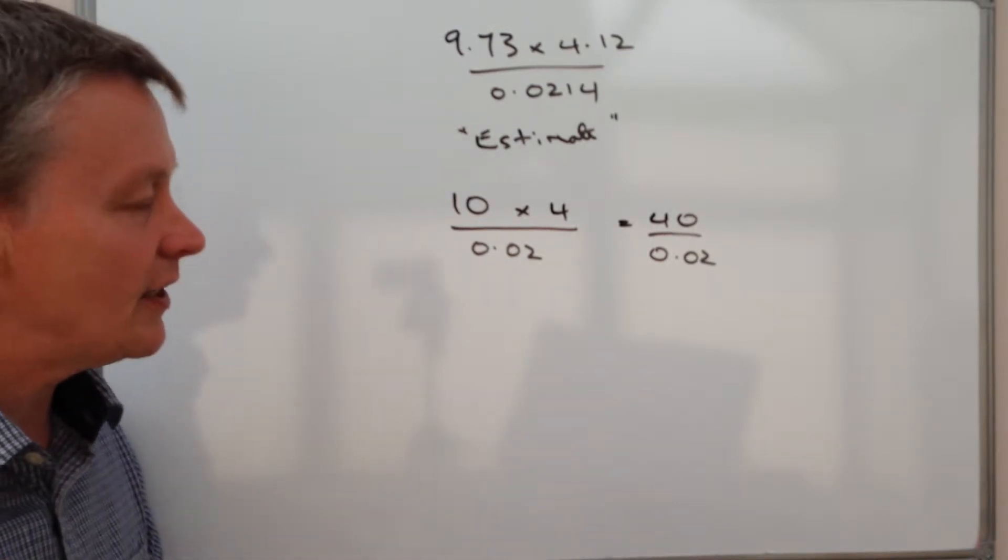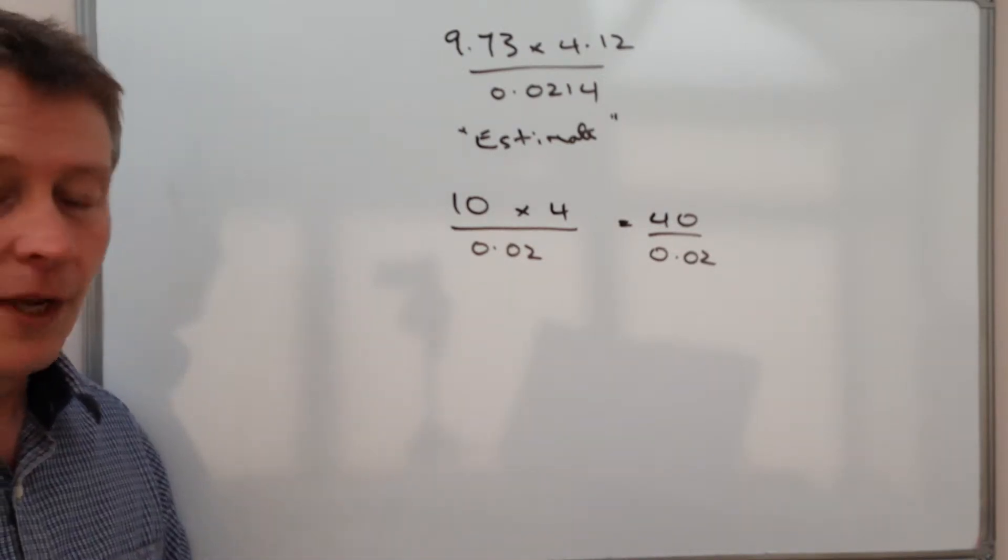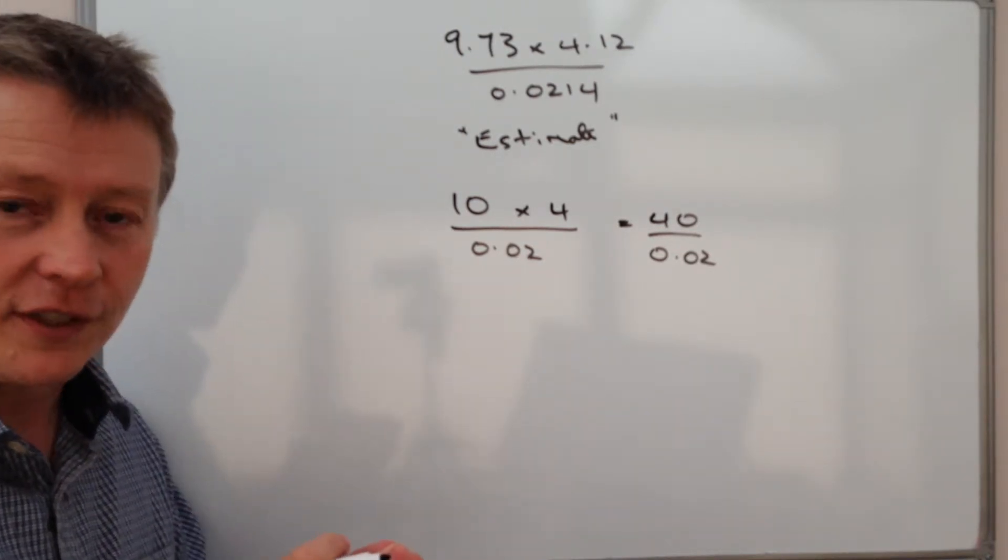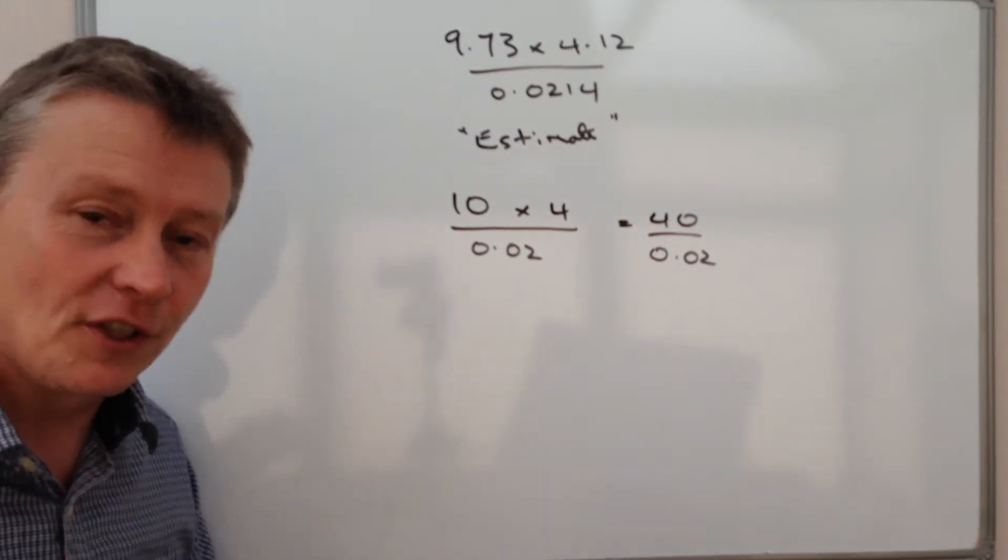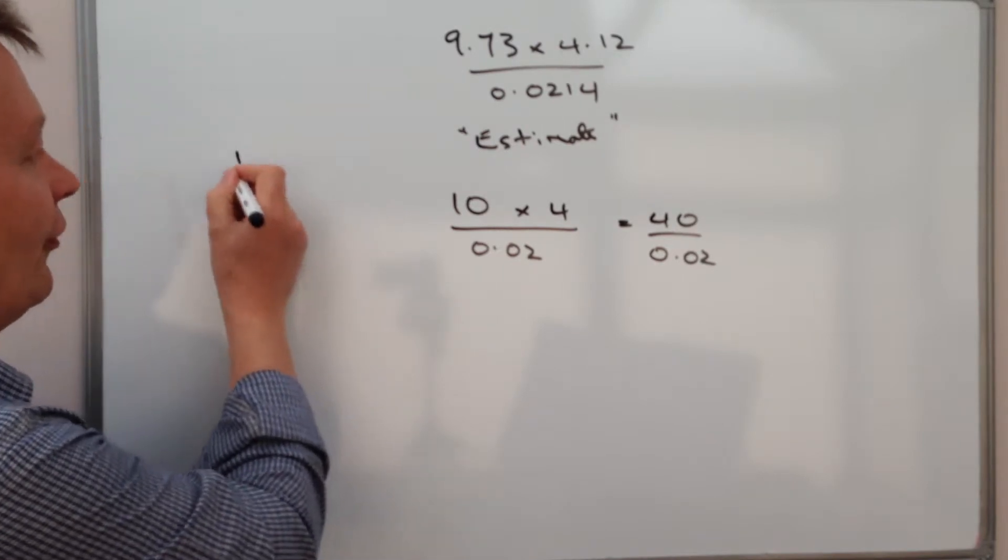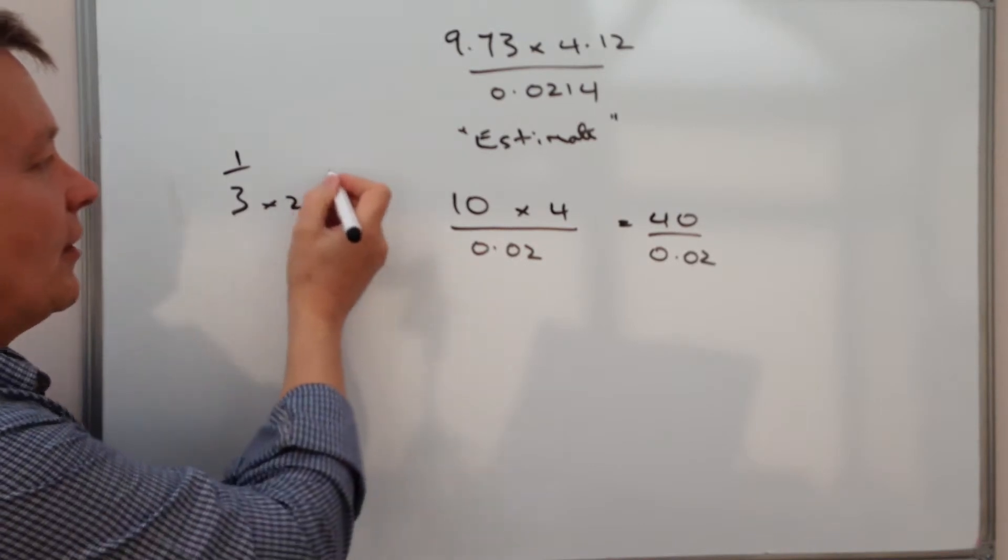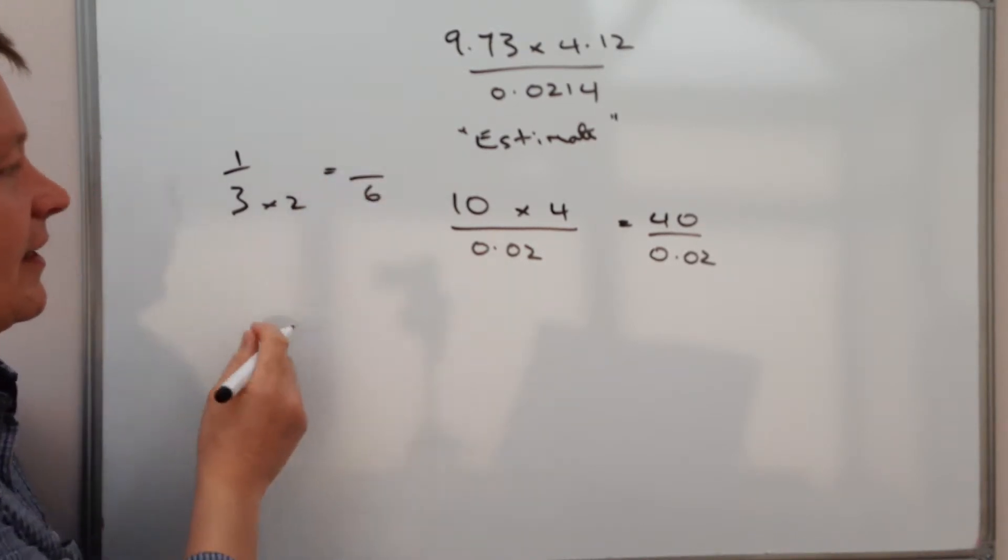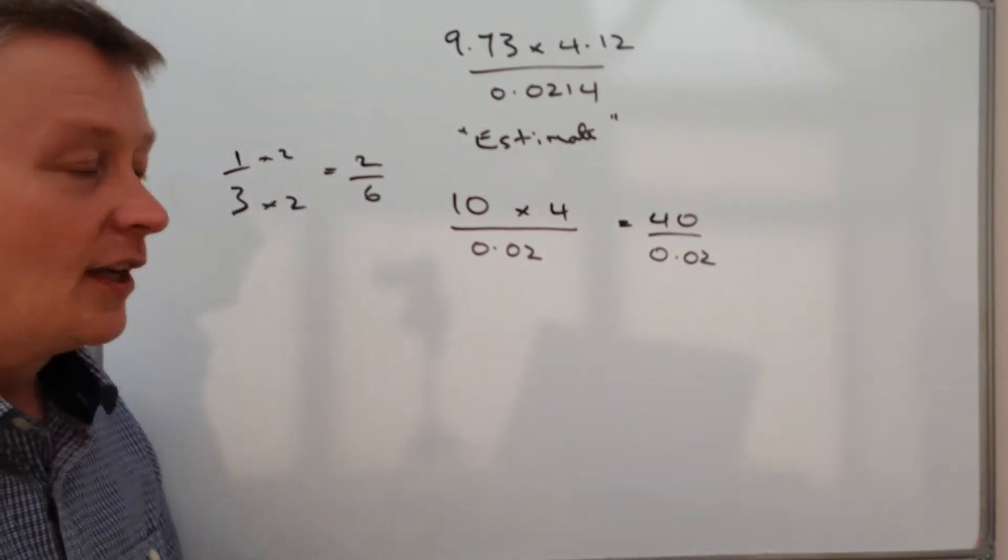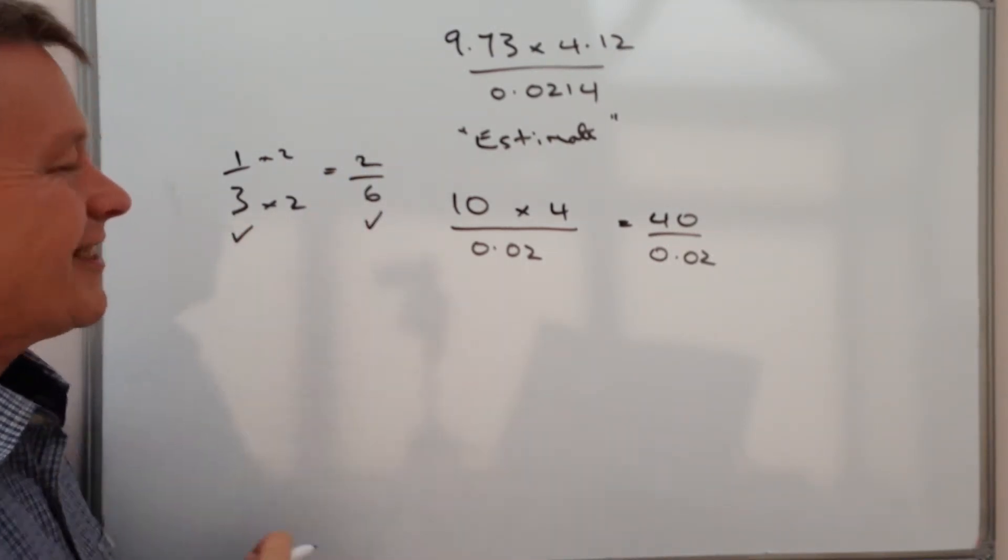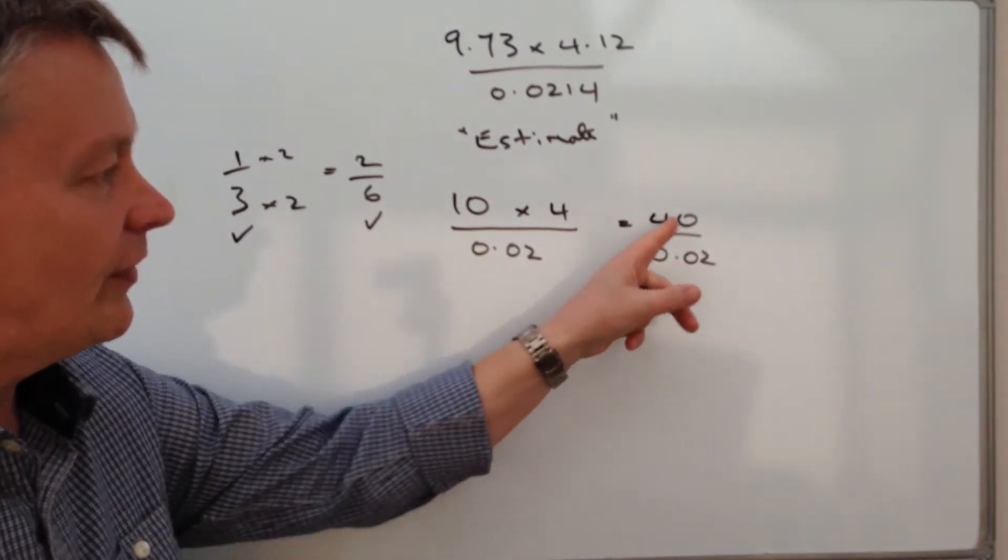So there's a couple of ways that you can do it. The one that I generally tend to advocate is to manipulate the fraction to suit yourself, because the whole point with fractions is that providing you do the same to the top and the bottom, the fraction doesn't change. It's rather like saying, well, I've got a third. Well, if I've got a third and I multiply the bottom by 2, that becomes 6. Well, providing I multiply the top by 2, that becomes 2/6. Well, 2/6 and 1/3 are exactly the same fraction.